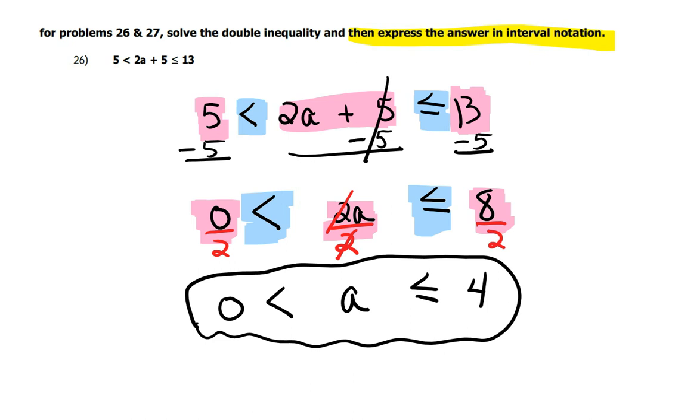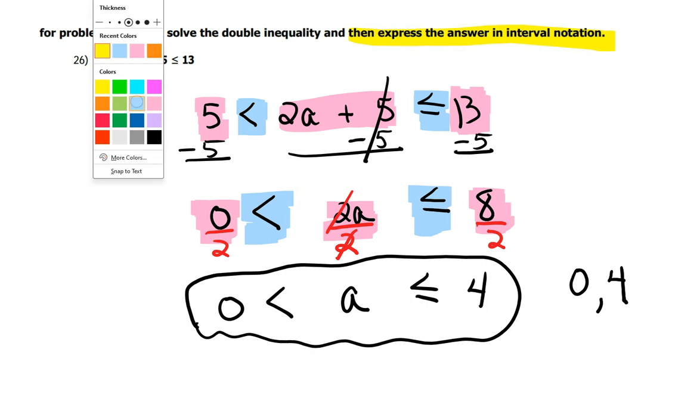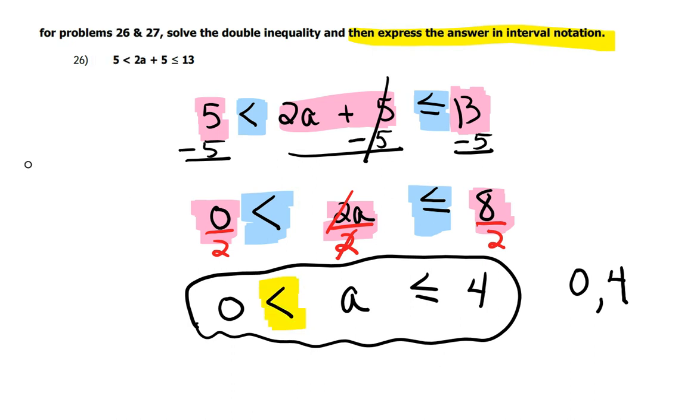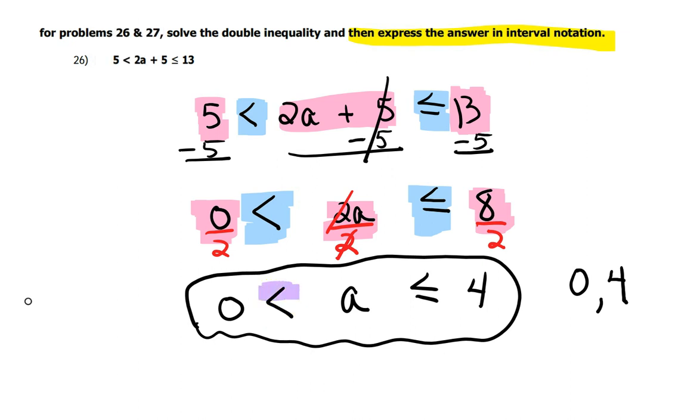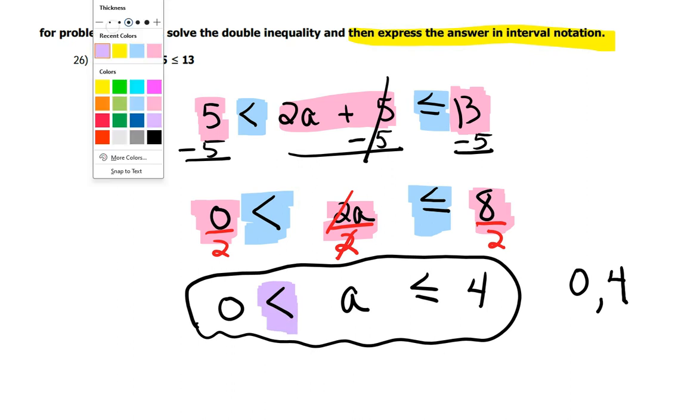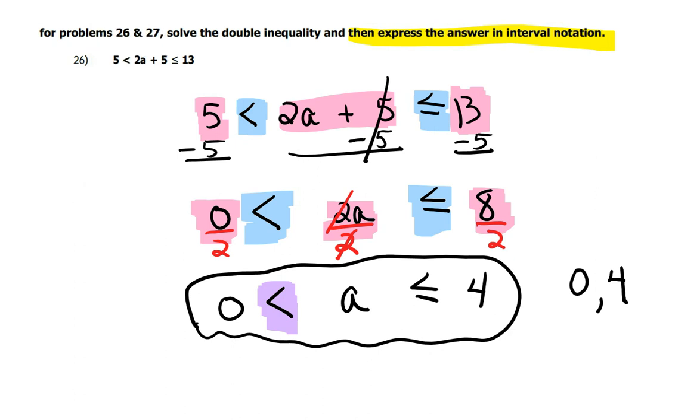Interval notation does not utilize any variables. You just put down the starting number and a comma and the ending number. So, it starts at 0 and it ends at 4. Now, the 0 is next to this symbol here. Sorry. There we go. It's a different color. Is next to this symbol here, which does not have an equal to on it.